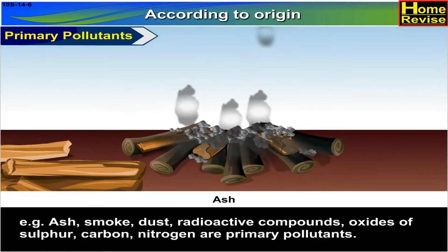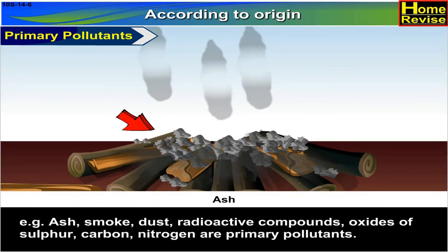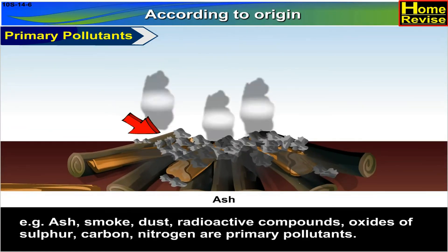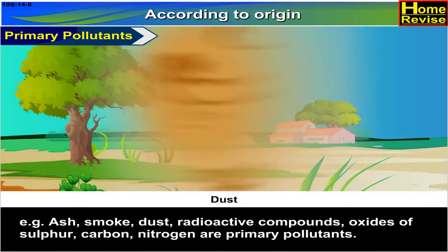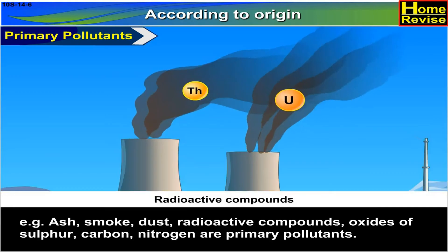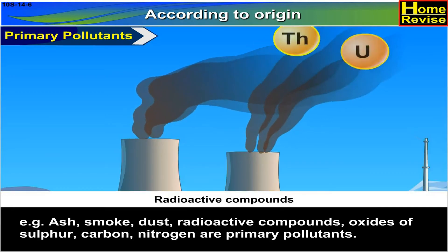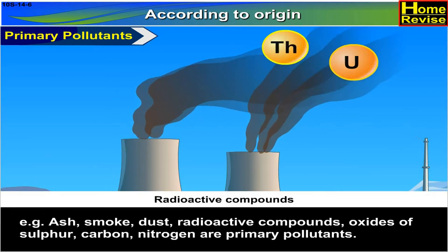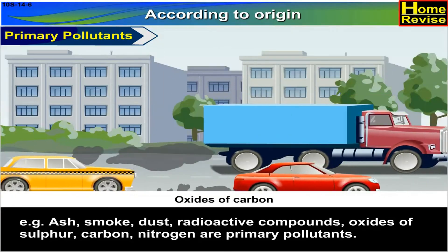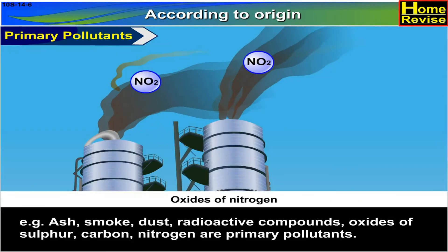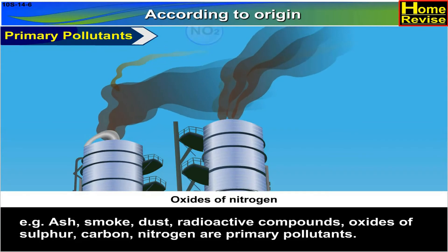For example, ash, smoke, dust, radioactive compounds, oxides of sulphur, carbon, nitrogen — all these are primary pollutants.